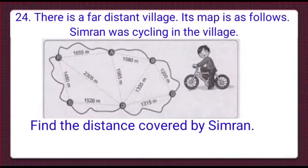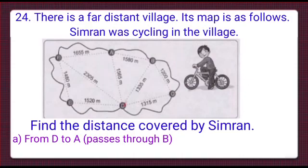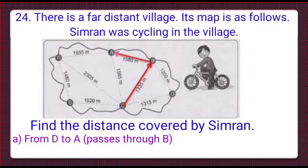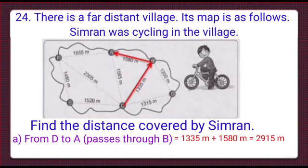Here we have to find the distance covered by Simran while moving from one point to another. In part A, we have to find the distance from D to A passing through B. When Simran moves from D to B, he covers a distance of 1335 meters. Then from B, he turns towards A and covers a distance of 1580 meters to reach A. Adding both these distances, we get a total distance of 2915 meters from D to A through B.